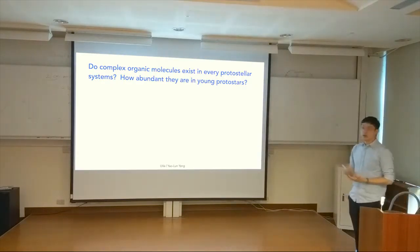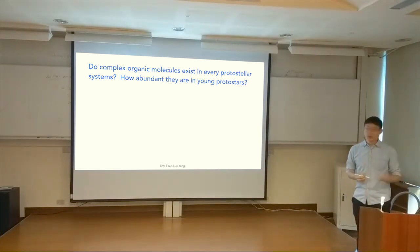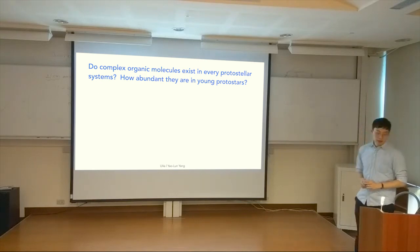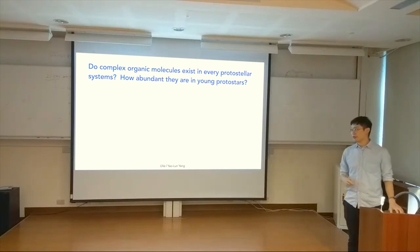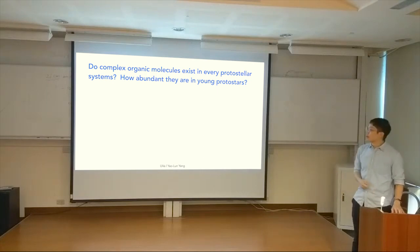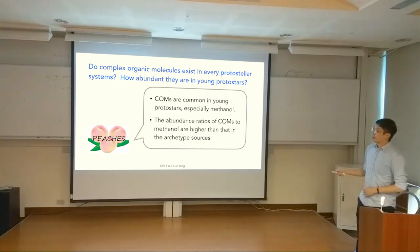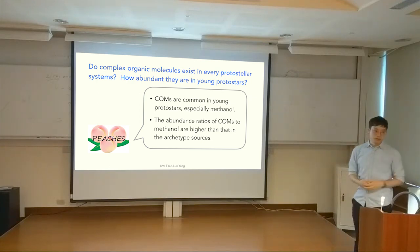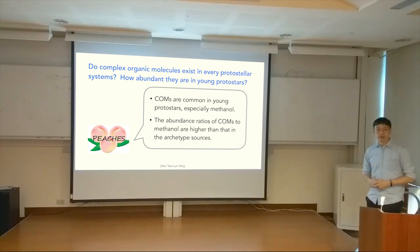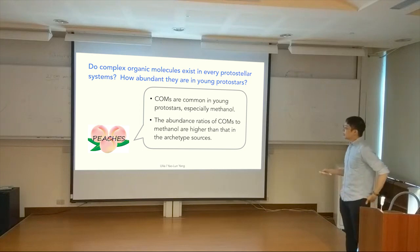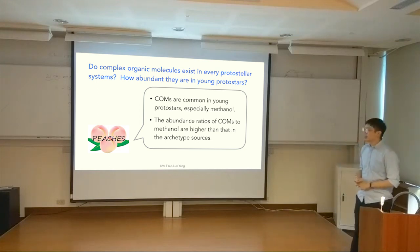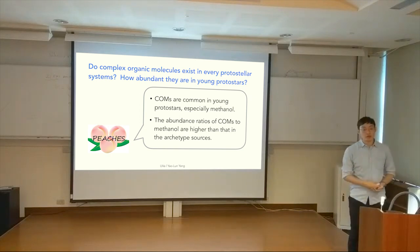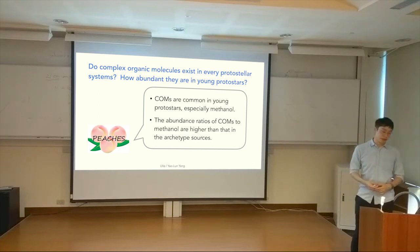The big question we're trying to answer is: do these complex organic molecules exist in every protostellar system? And if so, how abundant are they in those young protostars? As a quick summary: the survey I'm going to talk about today is called the PEACHES survey. What we found is that complex organic molecules - COMs - are very common in young protostars, especially methanol, which is basically detected everywhere. The abundance ratio of these compounds to methanol is a bit higher than those archetype sources where we first discovered complex organic molecules.